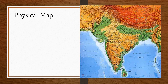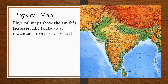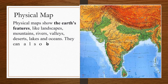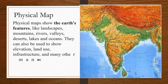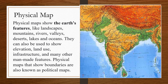Physical map. A physical map shows the earth's features like landscapes, mountains, rivers, valleys, deserts, lakes, and oceans. Physical maps can also be used to show elevation, land use, infrastructure, and many other main map features.